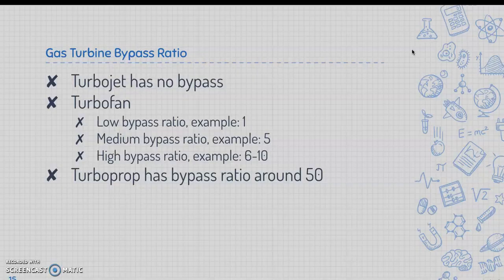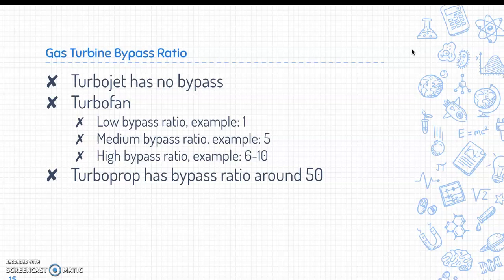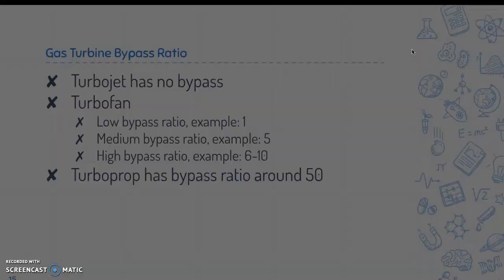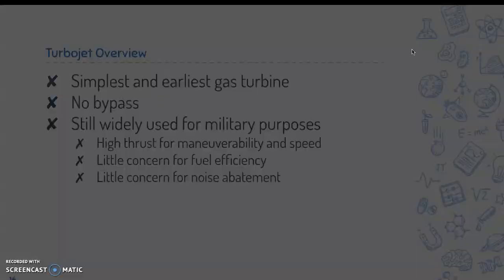A turbojet has no bypass. The turbofan has three different bypass ratios — low, medium, or high — with examples shown on the slide. The turboprop has a bypass ratio of around 50.